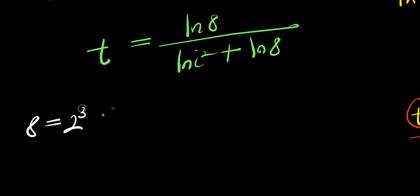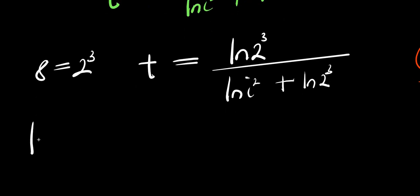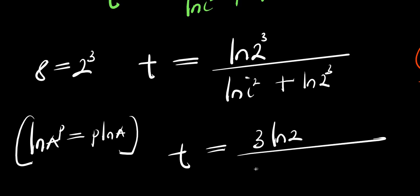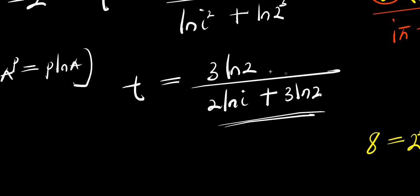Since 8 equals 2 power 3, natural log 8 equals natural log 2 power 3 equals 3 natural log 2. And natural log i squared equals 2 natural log i. So t equals 3 natural log 2 divided by 2 natural log i plus 3 natural log 2. This is also our answer.